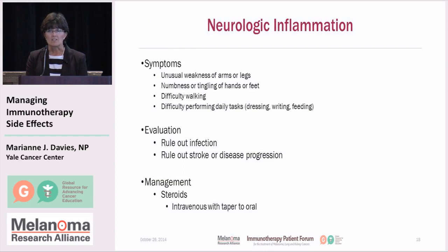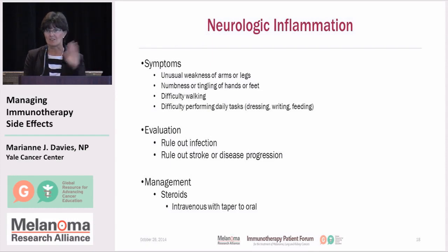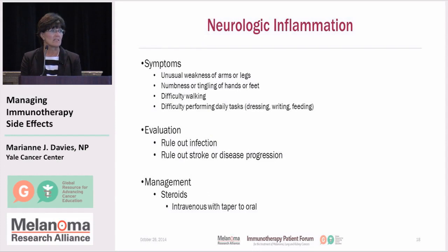Neurologic inflammation is something I've seen much less frequently than some of the others, though as I said, all grade three and four events are very rare — less than five percent of all the things we're talking about. Patients may develop some weakness in the arms or legs, numbness and tingling in their fingertips or toes. These are changes over baseline, not things you might have experienced from prior therapies.